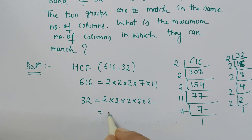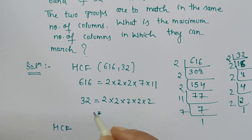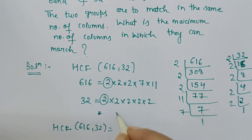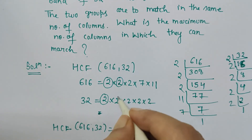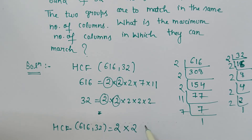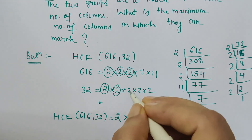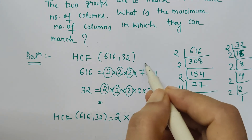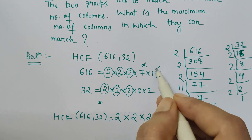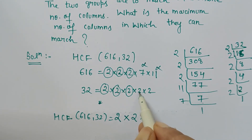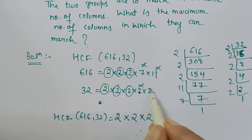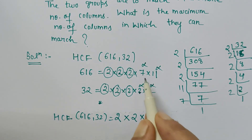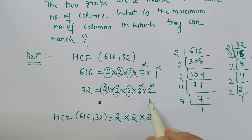How do we find HCF? HCF is found by taking only the common values. HCF of 616 and 32: 616 has a 2 and 32 has a 2, so we write that once. Again 616 has a 2 and 32 has a 2, so we write that once more. Again both have a 2, so we write it again. But 616 has a 7 — does 32 have a 7? No. Does 32 have an 11? No. And the remaining 2s in 32 have no pair in 616, so we do not count those either.